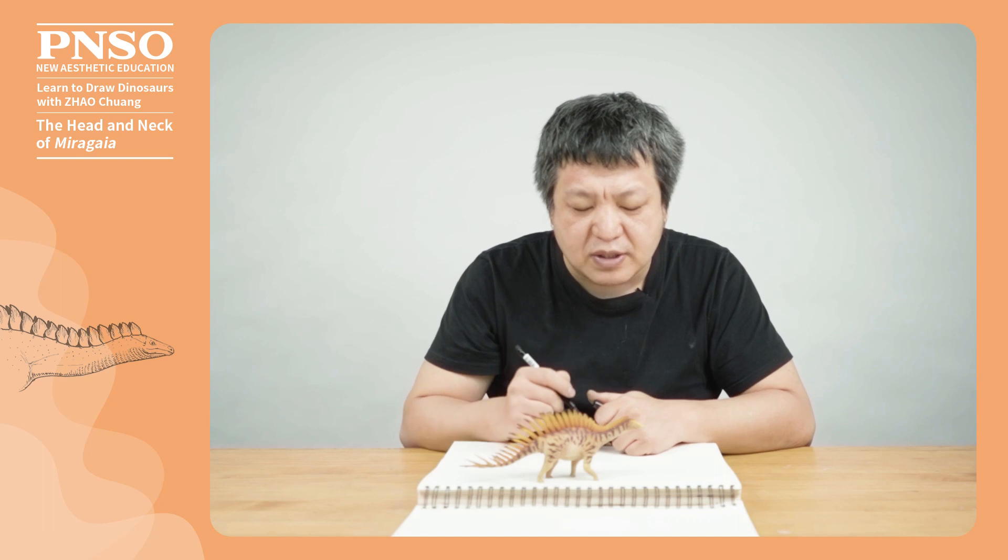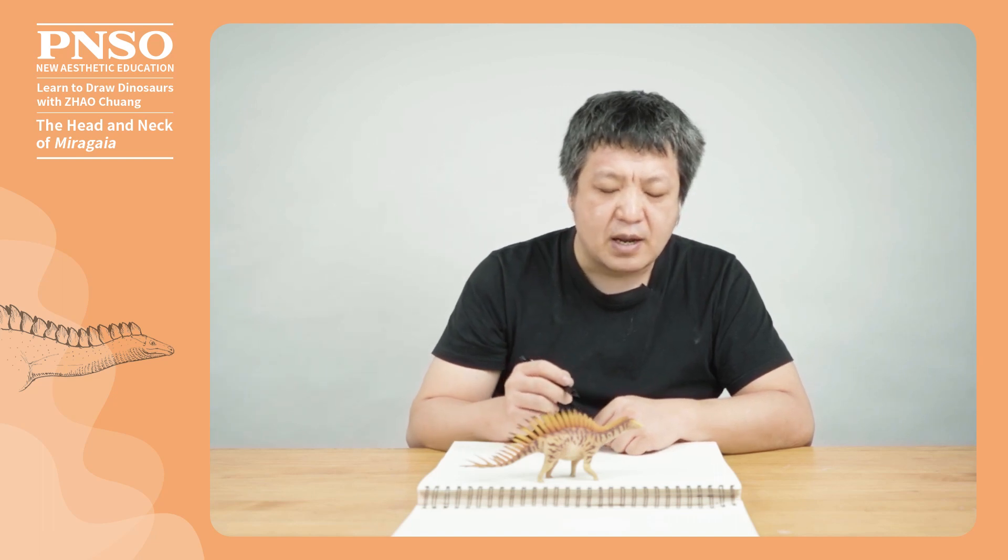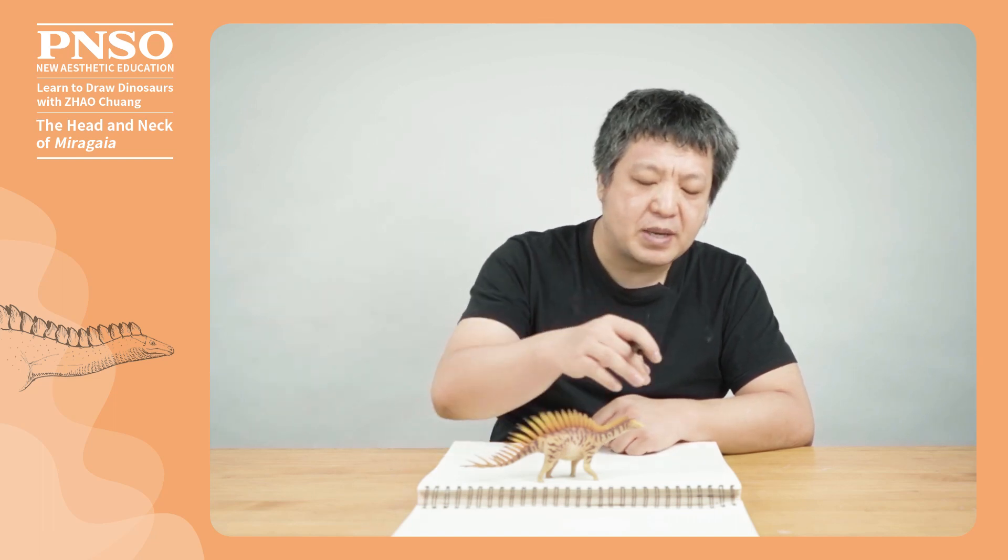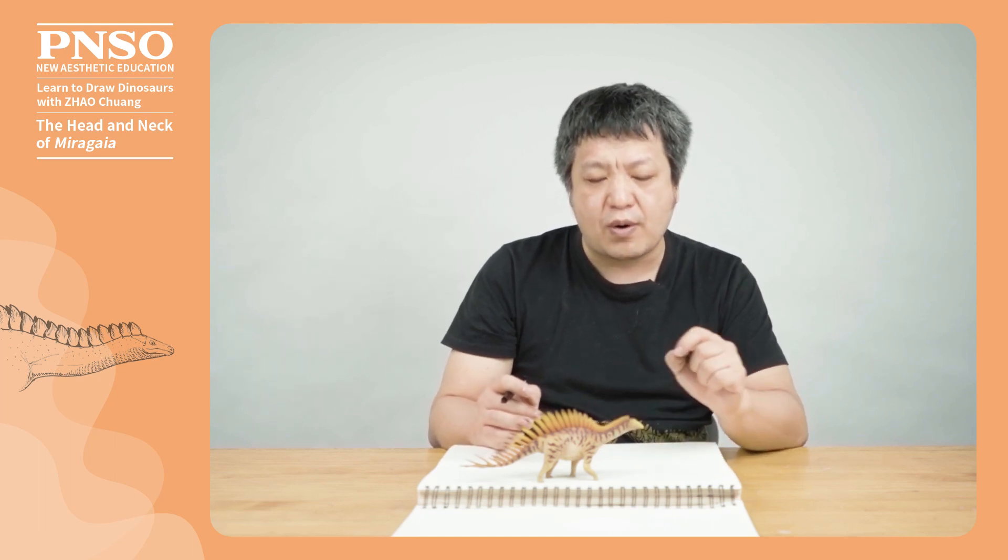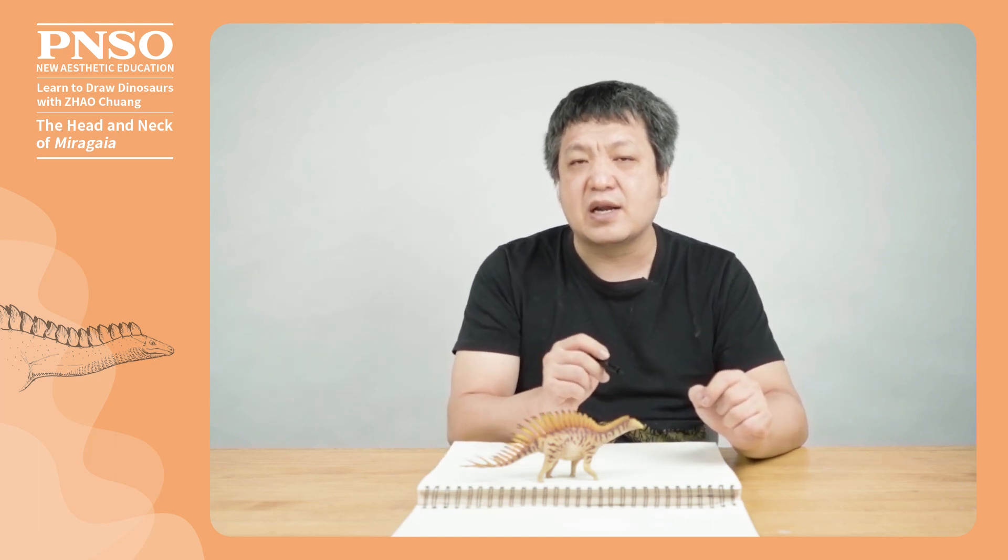Miragaia had relatively complex muscles on its neck. When drawing, we need to understand the general direction of its muscles and sketch them with relatively simple strokes.